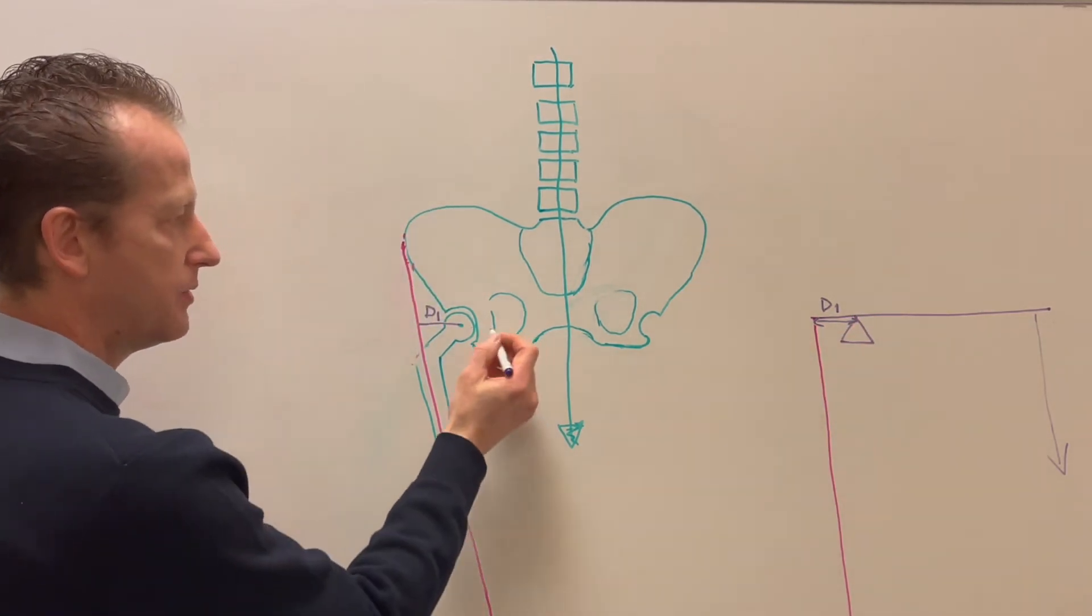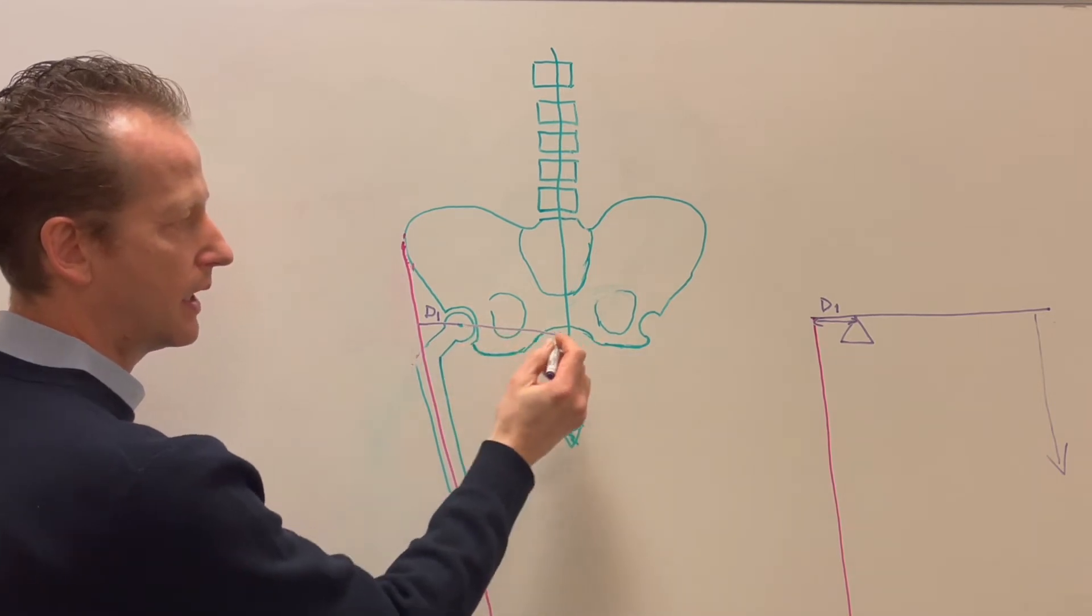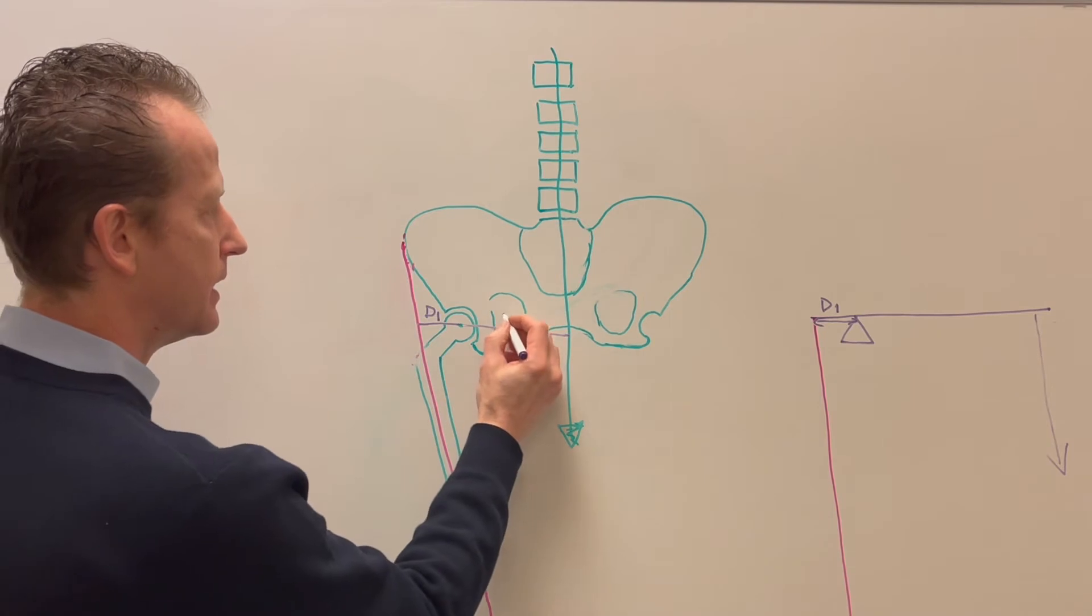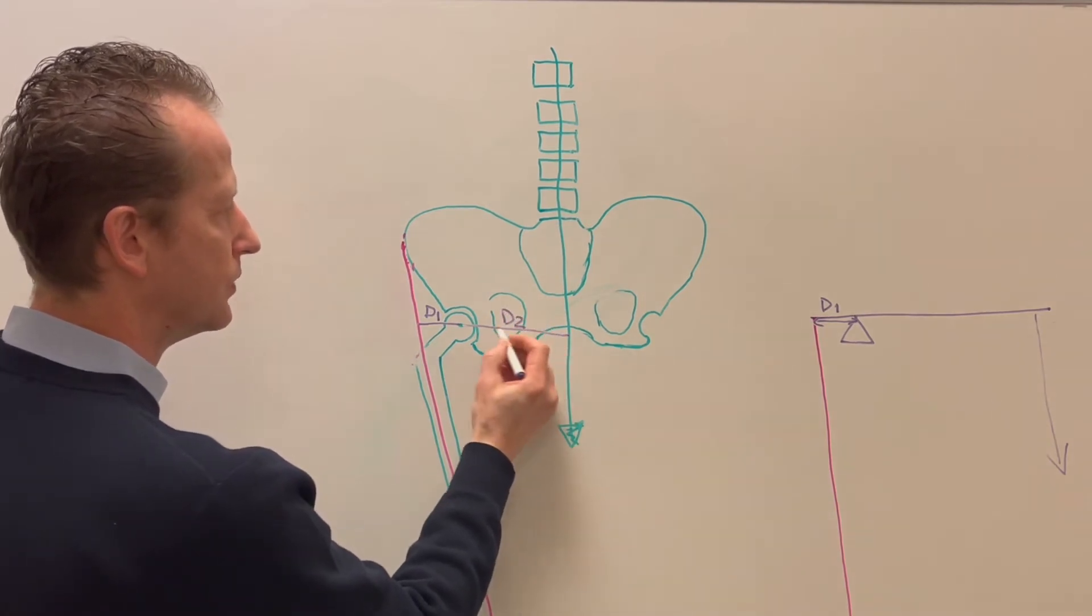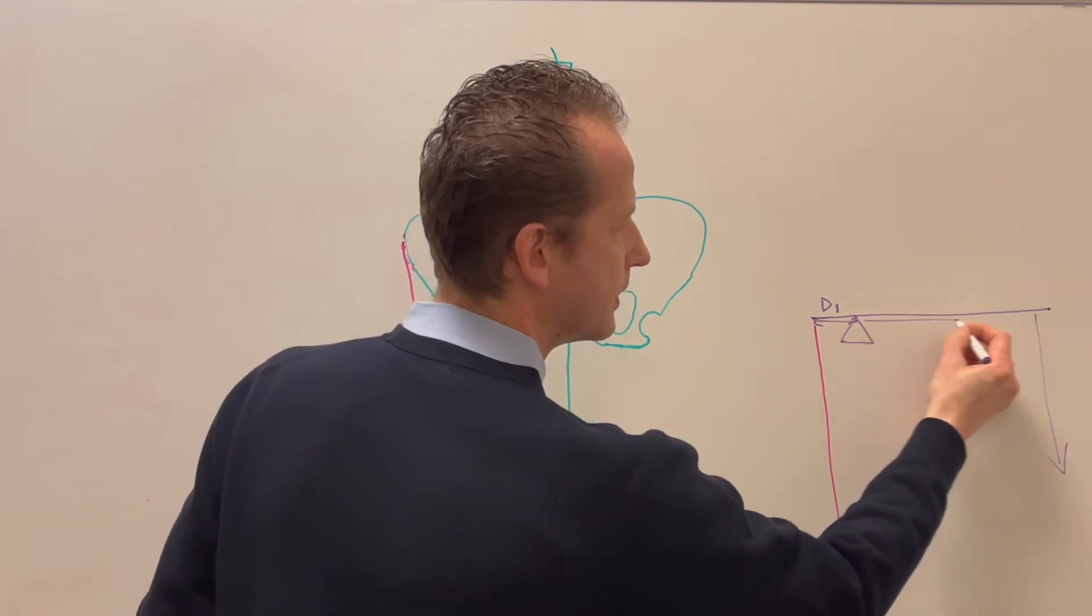Now, the other moment arm is from center of rotation hip joint to our gravity, to our body weight. This we'll call D2. That distance is much longer.